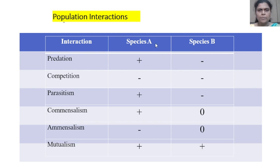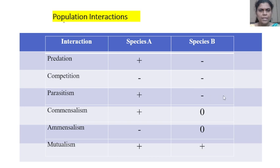In terms of population interactions between Species A and Species B: in predation, Species A has a positive interaction and Species B has a negative interaction. In competition, both species have negative interactions. In parasitism, one species is benefited (positive) and the other is harmed (negative). In commensalism, Species A has a positive interaction and Species B is not affected. In amensalism, Species A has a negative interaction and Species B is not affected.